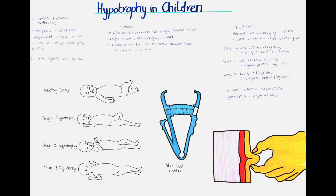Hypotrophy comes in different clinical pictures and can be divided into three stages. Markers for the stage of hypotrophy are the height and weight of the child, together with the amount of subcutaneous fat tissue present. This can be measured by measuring the thickness of skin folds at different areas of the body — the abdominal skin fold, the mid-axillary fold, the pectoral, suprailiac, and subscapular. The device used is called a skin fold caliper.